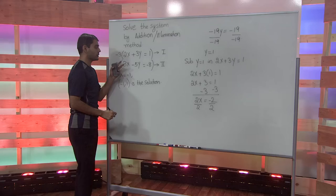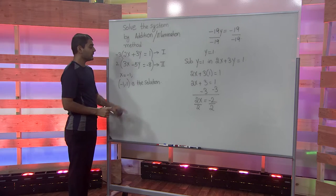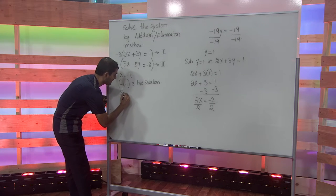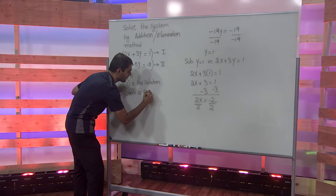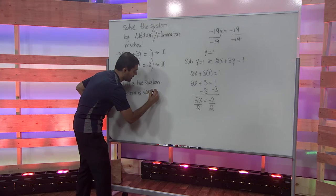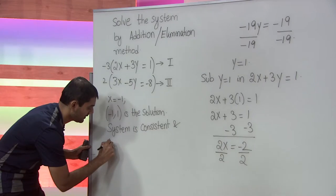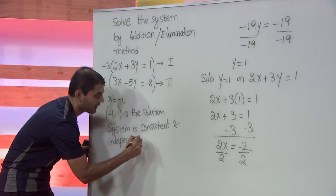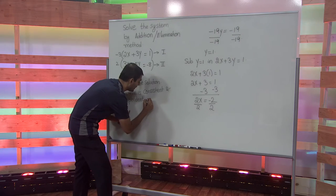This system has 2 equations, and these 2 equations represent 2 lines. These 2 lines intersect at the point negative 1 and positive 1. Hence, the system is referred to as consistent and independent, and it represents intersecting lines.